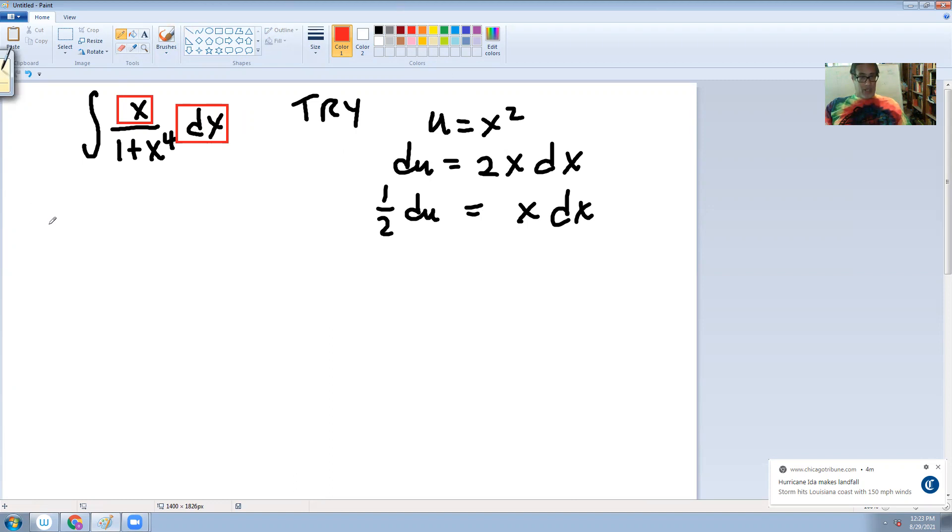So the integral becomes, and I just didn't want this. Let's go back to here. The integral is now transformed into one half. That can go outside because it's a constant. Du over 1 plus u squared.